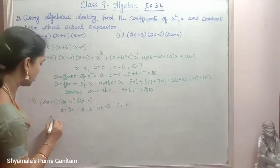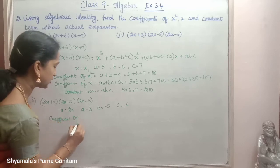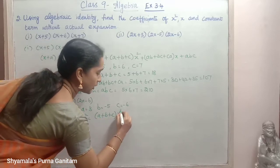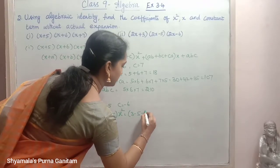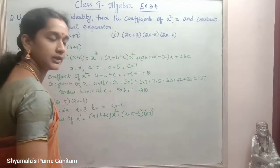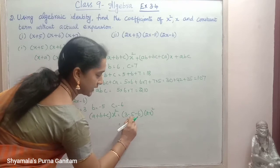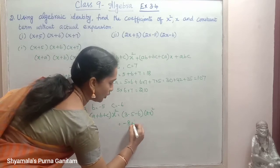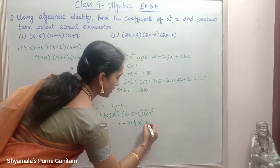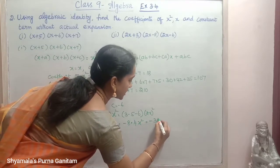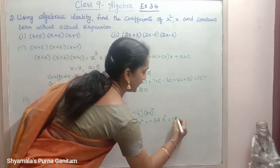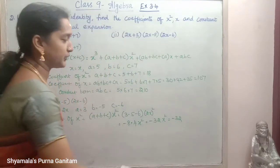The coefficient of x squared term is (a+b+c)×(2x)². So a+b+c is 3 + (−5) + (−6) = −8. And (2x)² is 4x². So −8 × 4x² gives −32x². The coefficient of x squared is −32.